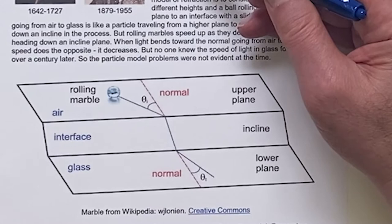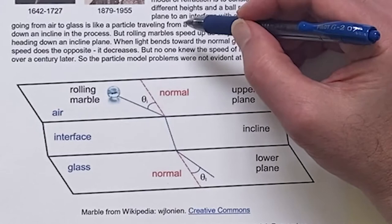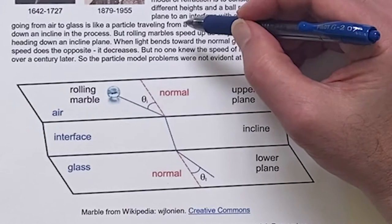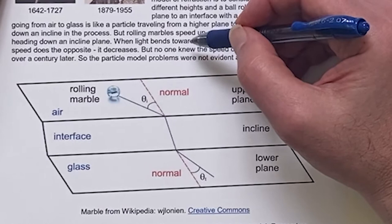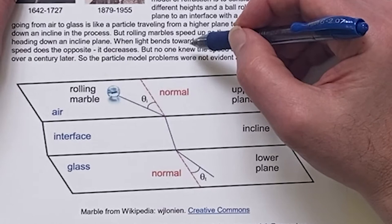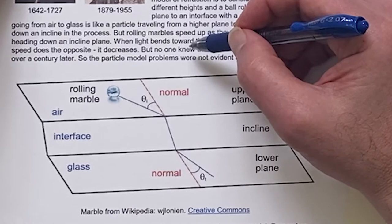For refraction, Newton envisioned two media — air and glass — as different levels of planes. A marble coming along would slide down the incline, giving some bending toward the normal. But the problem is the particle speeds up, and we know that light travels slower in glass, though they didn't know that at the time of Newton. Huygens was a contemporary of Newton who proposed a wave idea — remember the Huygens-Fresnel wave fronts and their principle, referred to as the baby waves.